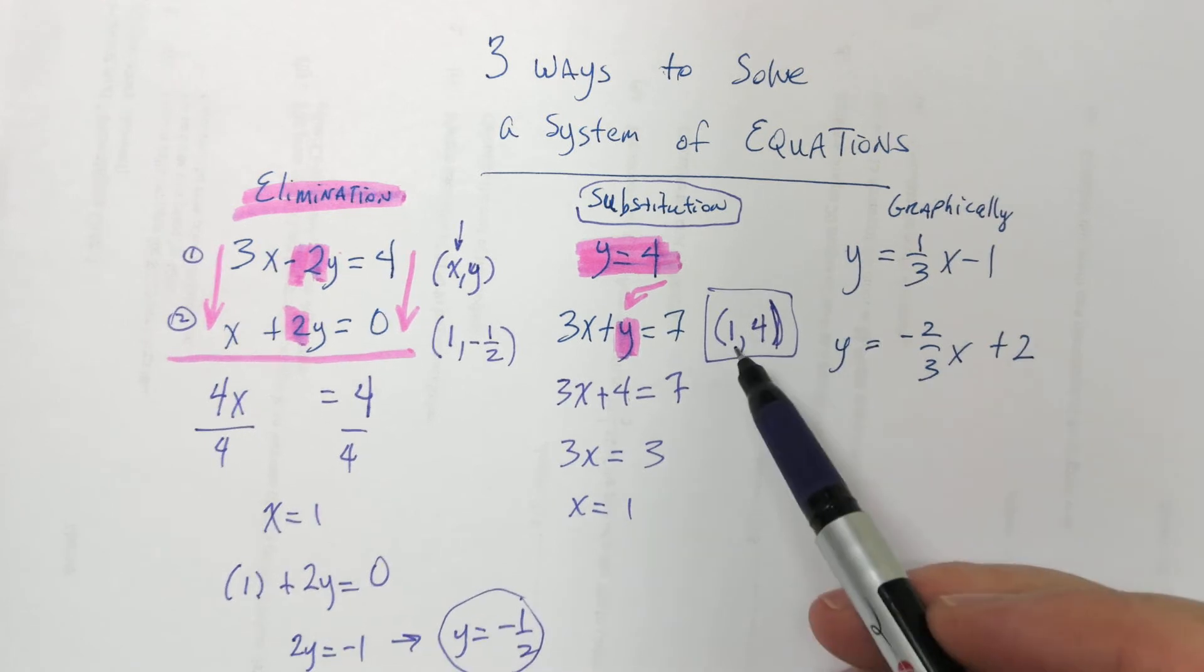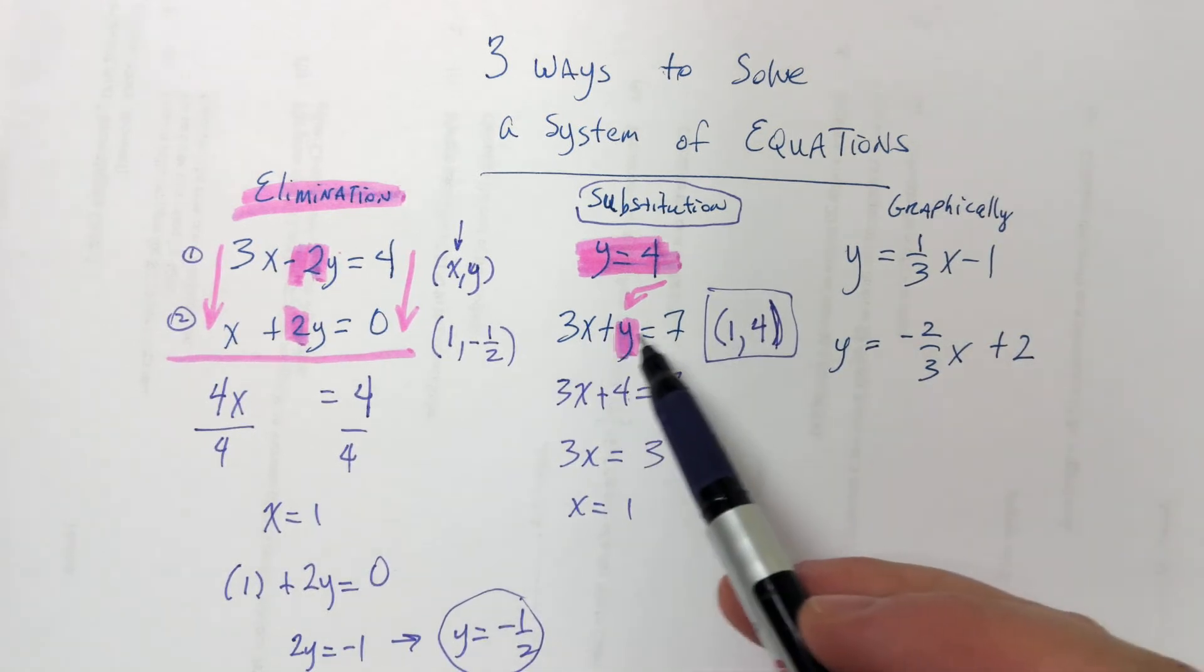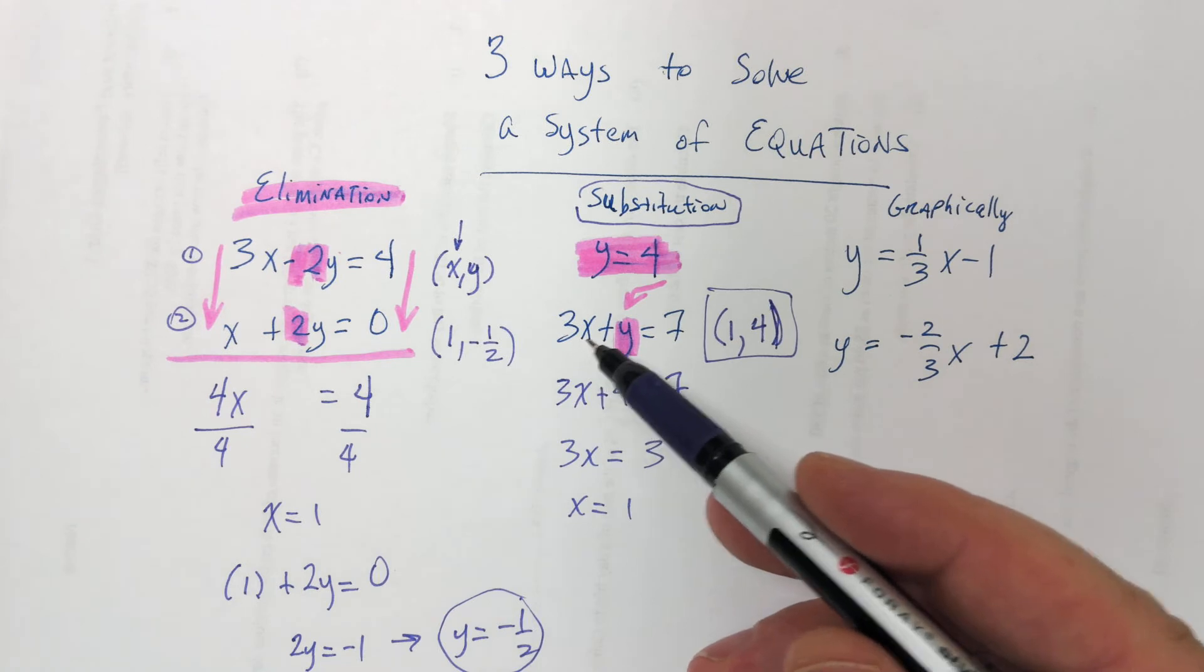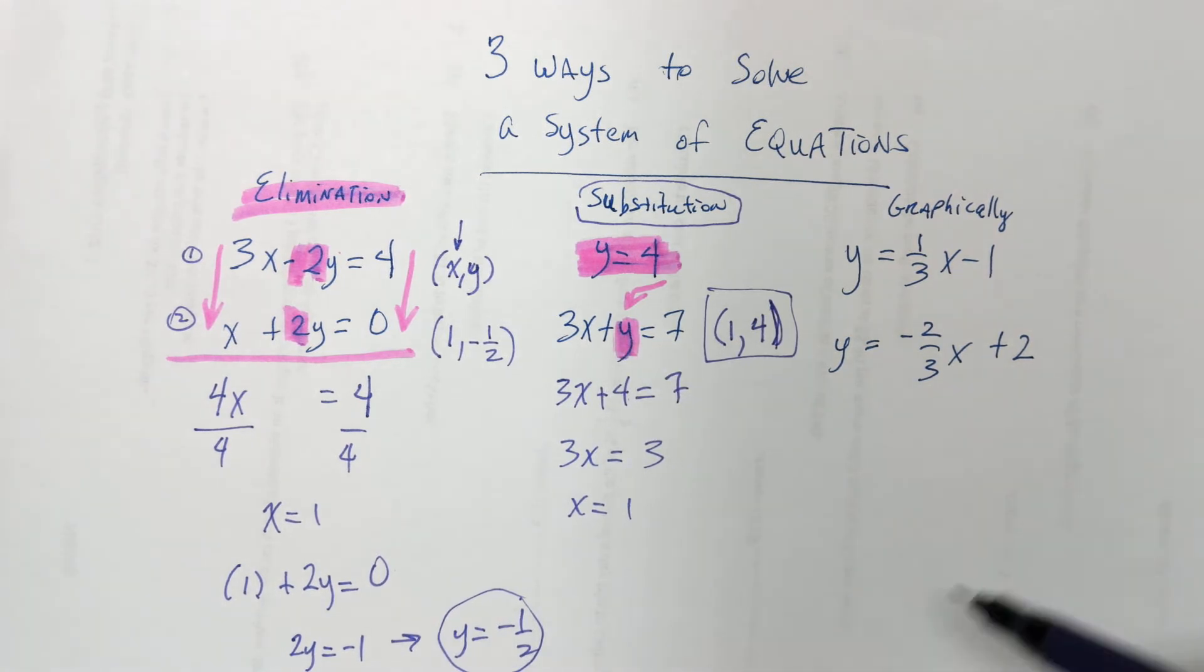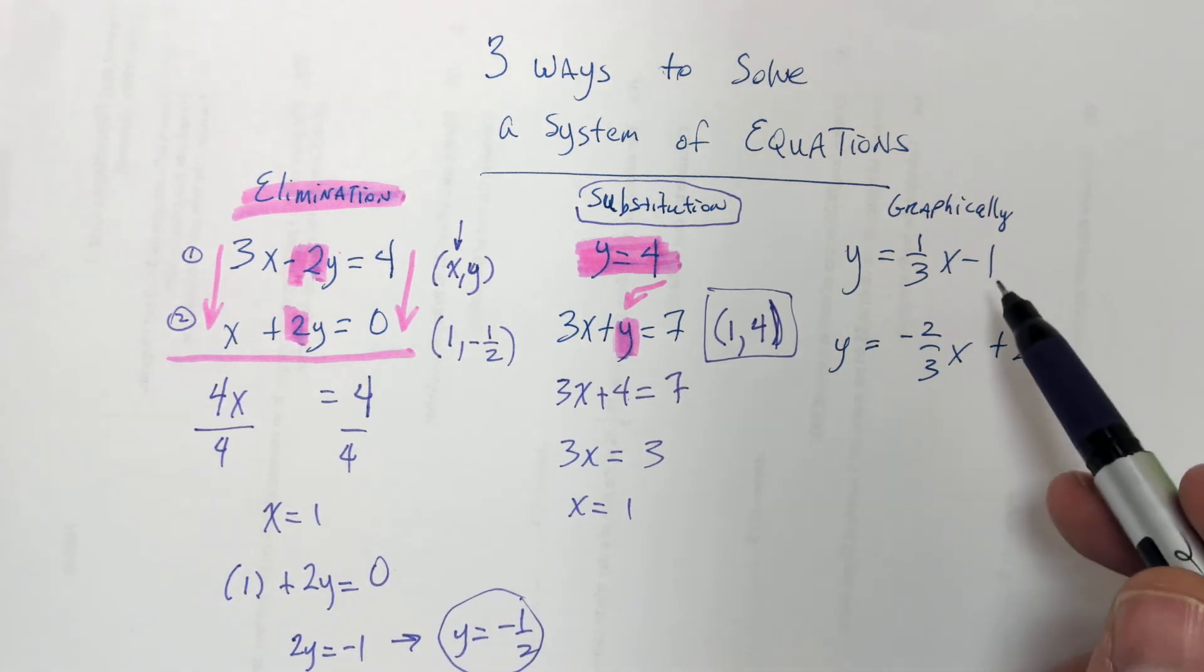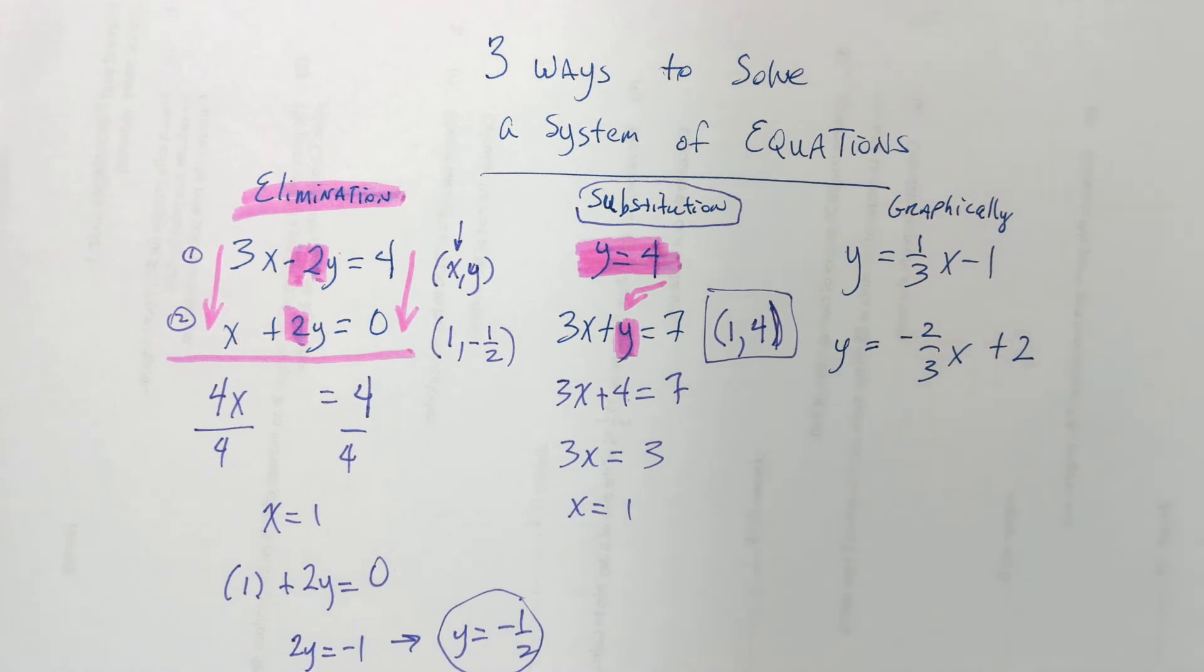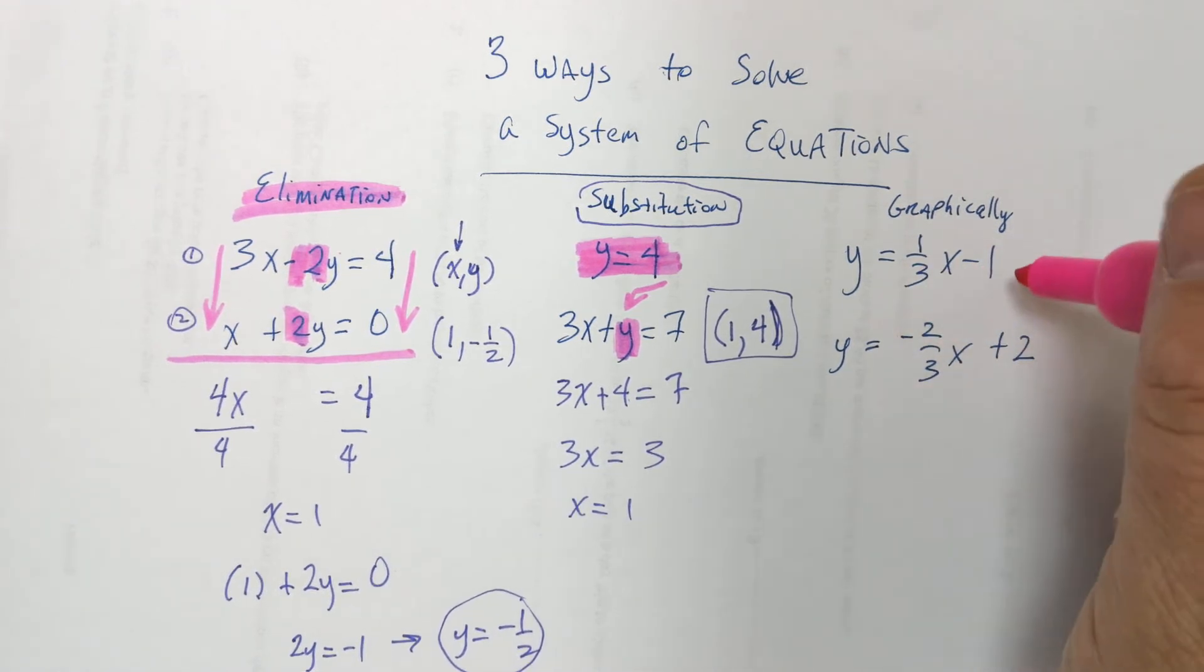And again, if you wanted to check it, you just plug that 1 in for x and the 4 for y. And it's true. 3 times 1 plus 4 is 7. So, that's right. And then, last one.